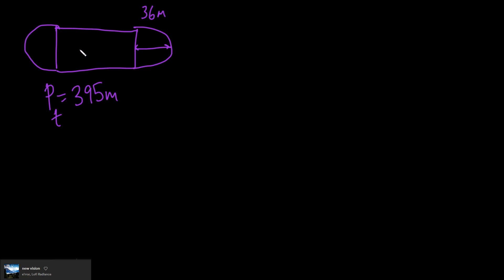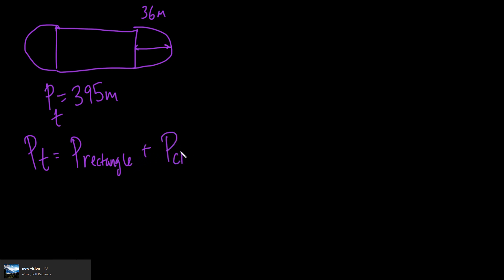How do we figure out the perimeter of just the rectangular part? We're given the total perimeter of the entire track. Since the track is comprised of a rectangle and two semicircles, we can write: perimeter total equals perimeter of rectangle plus perimeter of a circle. We know that because the two semicircles are equal to each other.